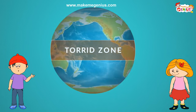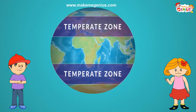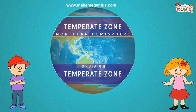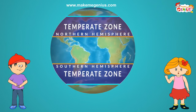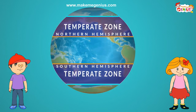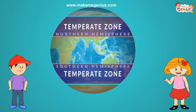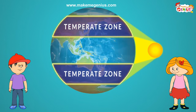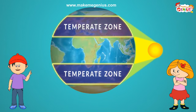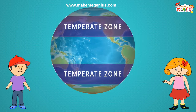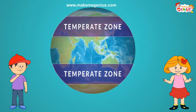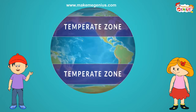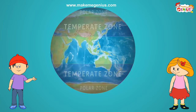Now let's move on to the temperate zone. There are two temperate zones, one in the Northern Hemisphere and one in the Southern Hemisphere. It is the largest among all climate zones. The weather here is moderate as the sun rays do not directly fall in the temperate zone. Moderate means it's neither very cold nor very hot. And in a few of these areas, there is year-round rainfall.